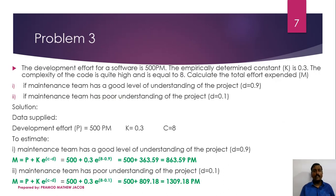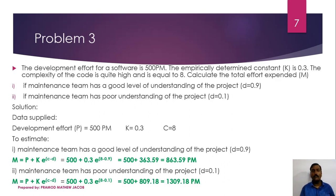Let's see a problem related to the Belady and Lehman model. The development effort for a software is 500 person months. The empirically determined constant K is 0.3. The complexity of the code is quite high and C is equal to 8. Calculate the total effort expended M if: first, the maintenance team has a good level of understanding, that is D equals 0.8, and second, if the maintenance team has poor understanding of the project, that is D equals 0.1.